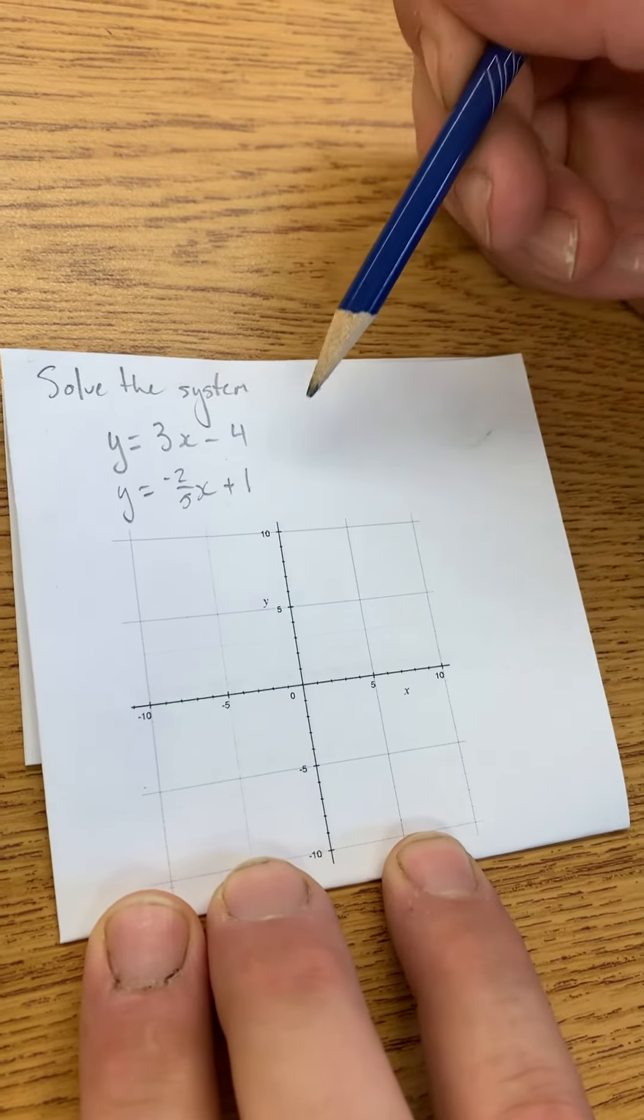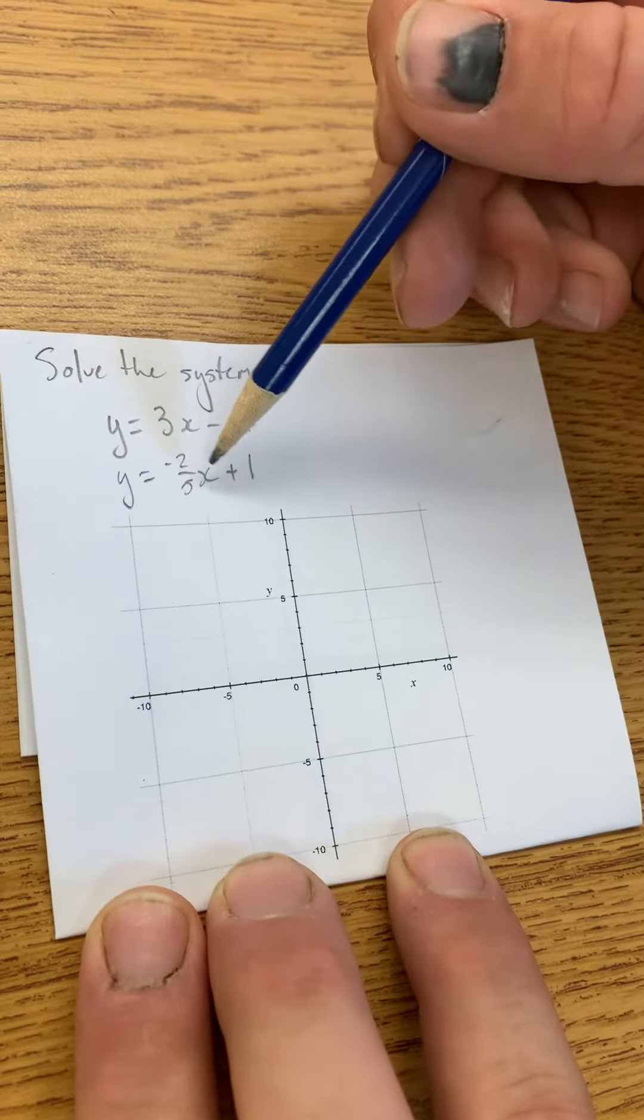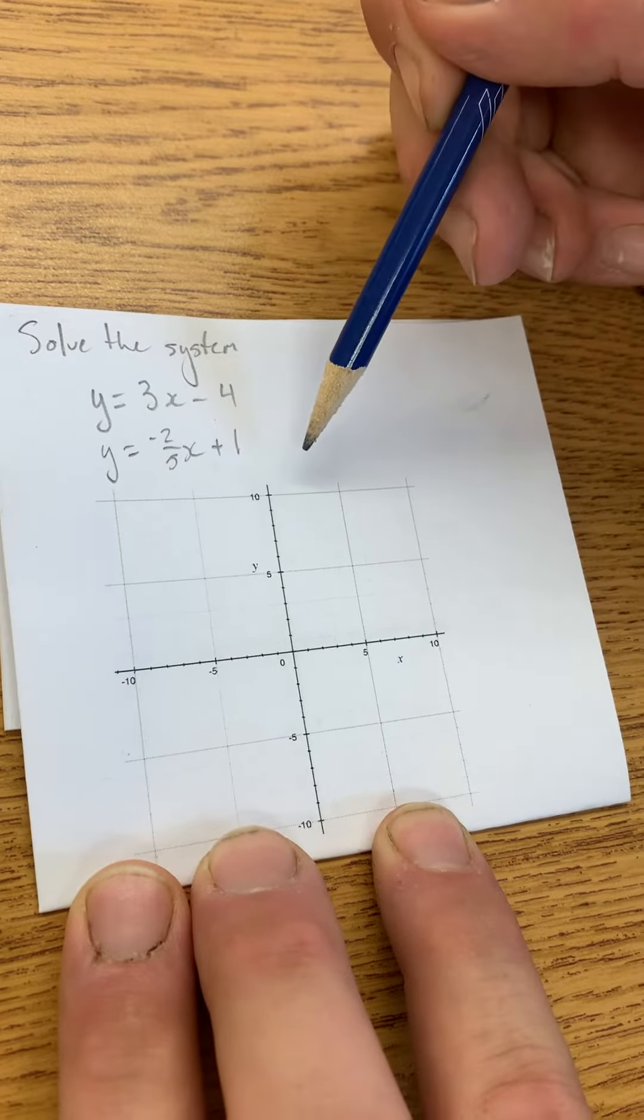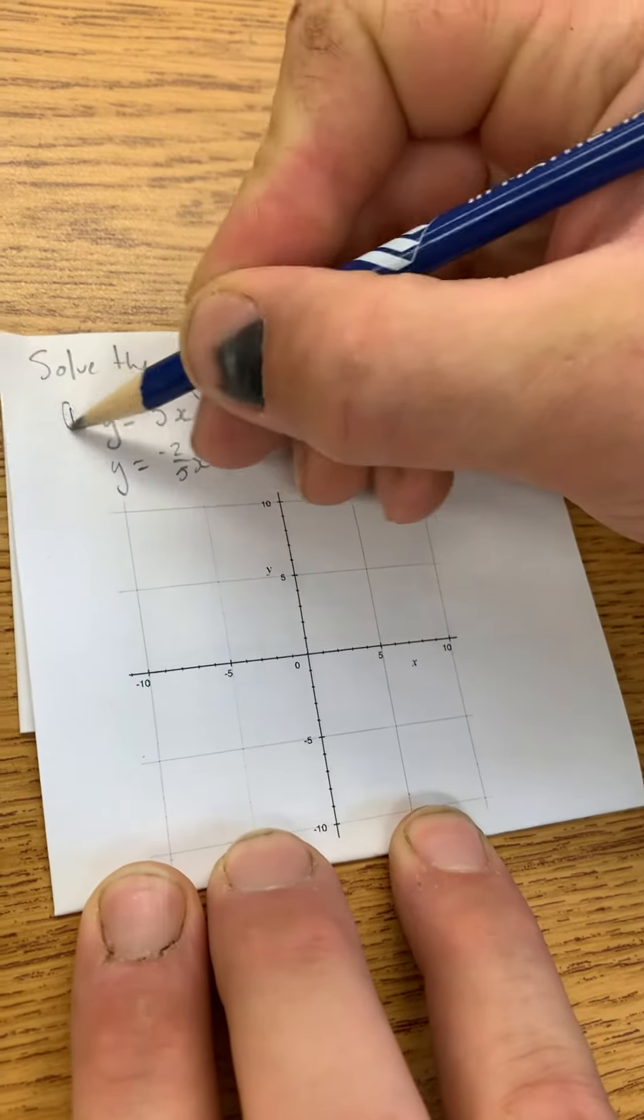So we've got two lines: y equals 3x minus 4, and y equals negative 2 over 5x plus 1. We'll start by graphing the first line.